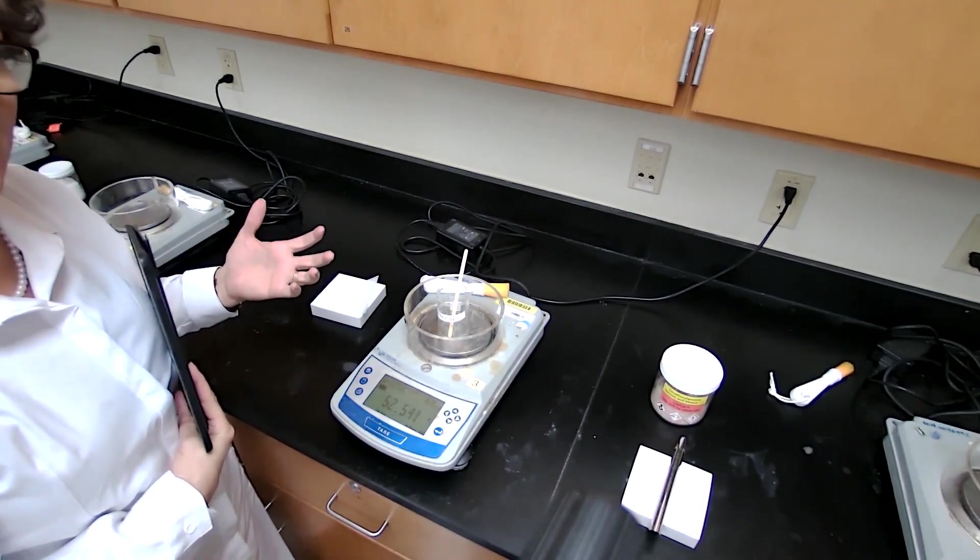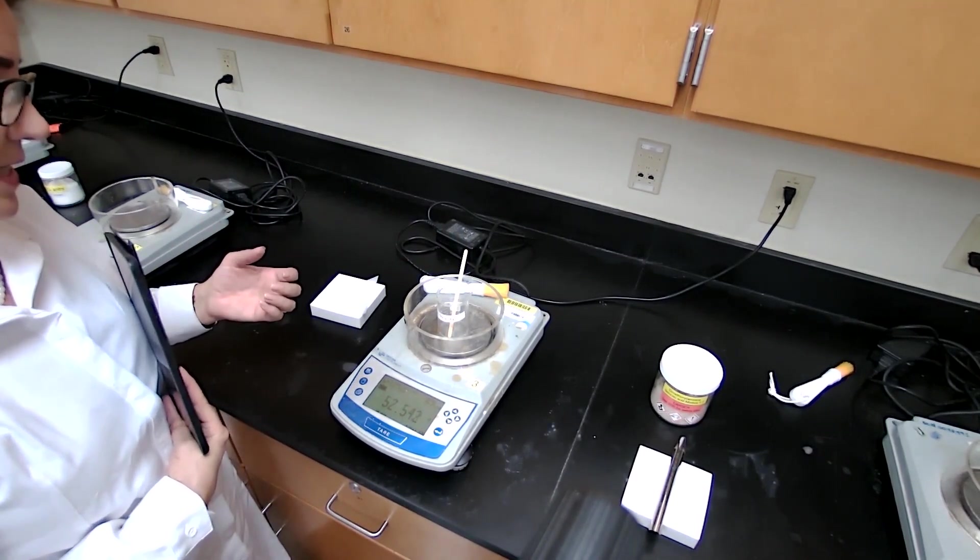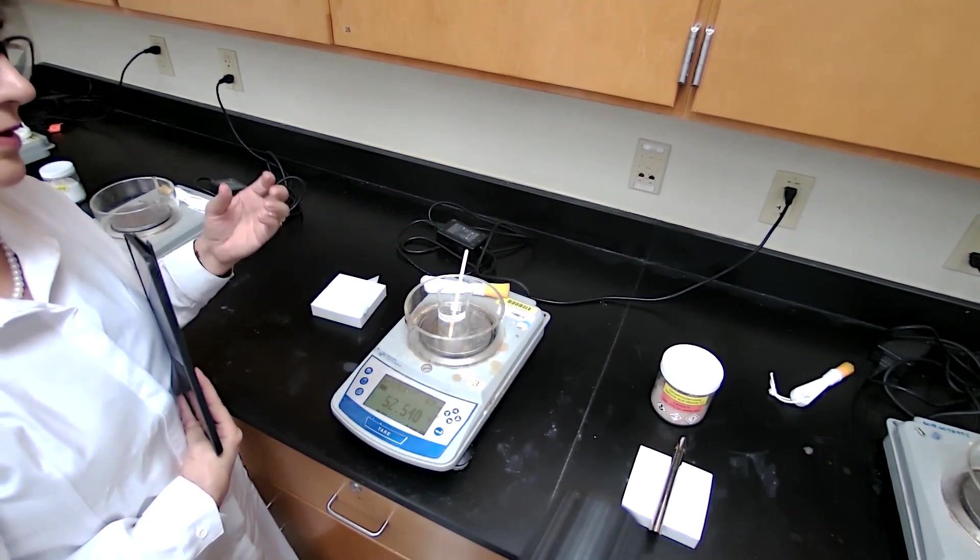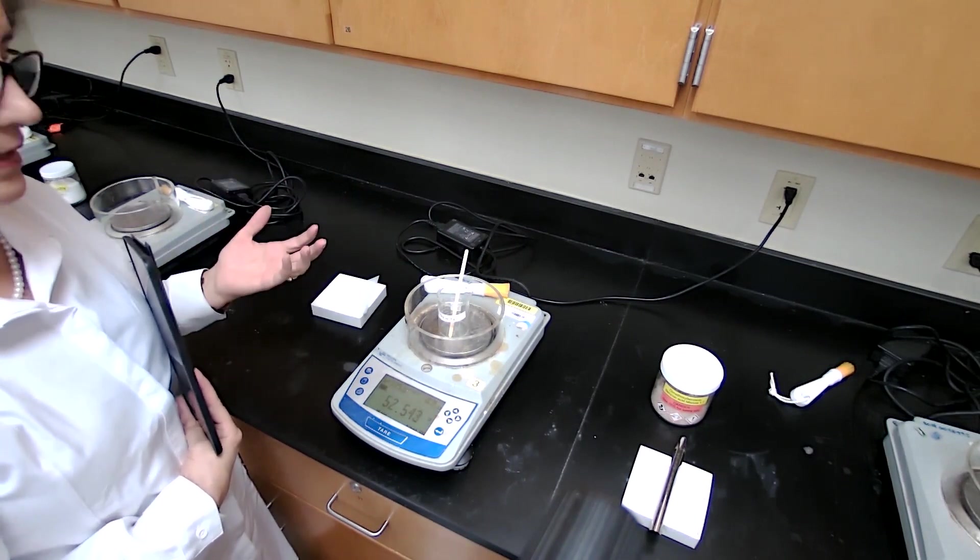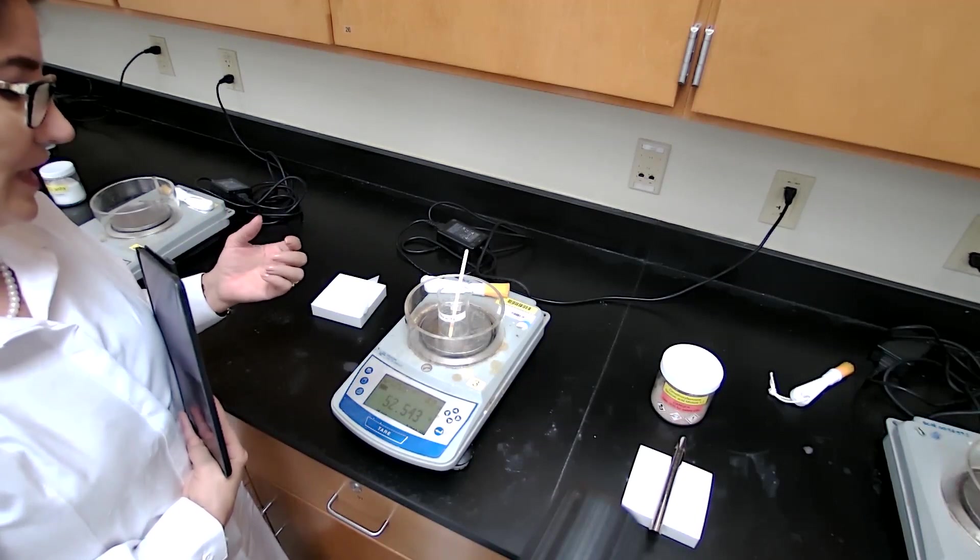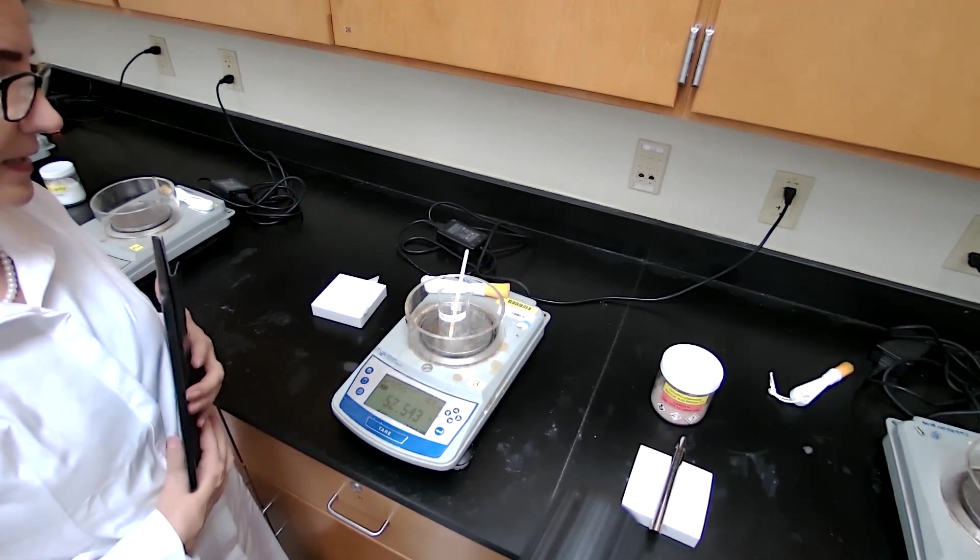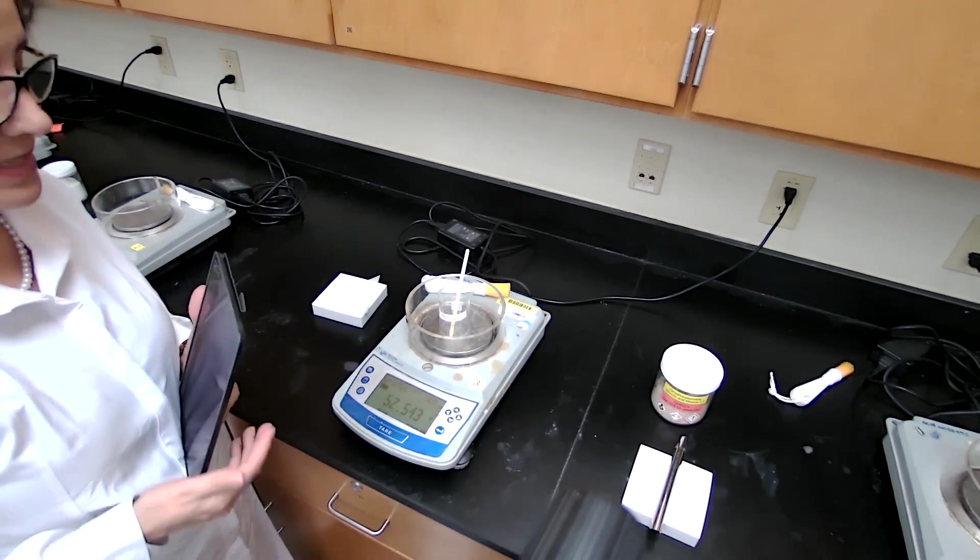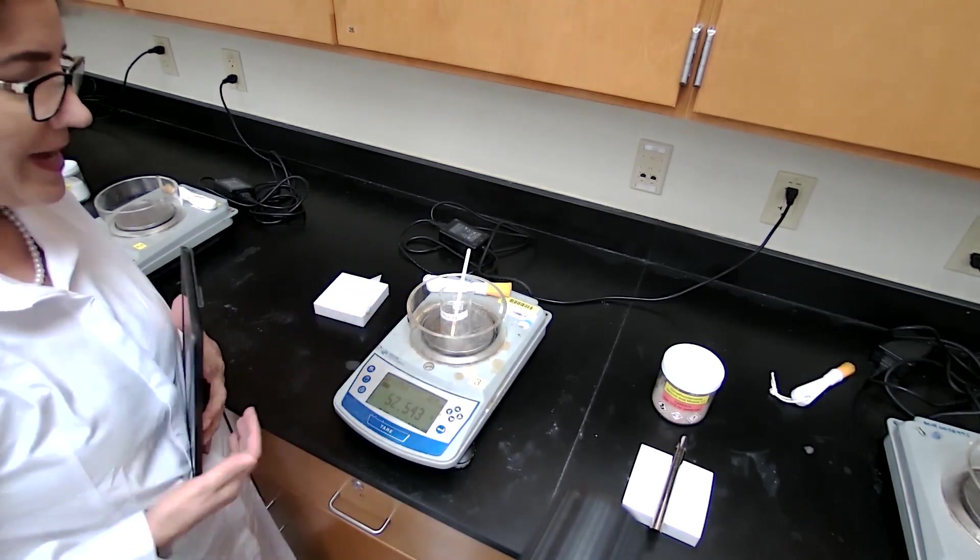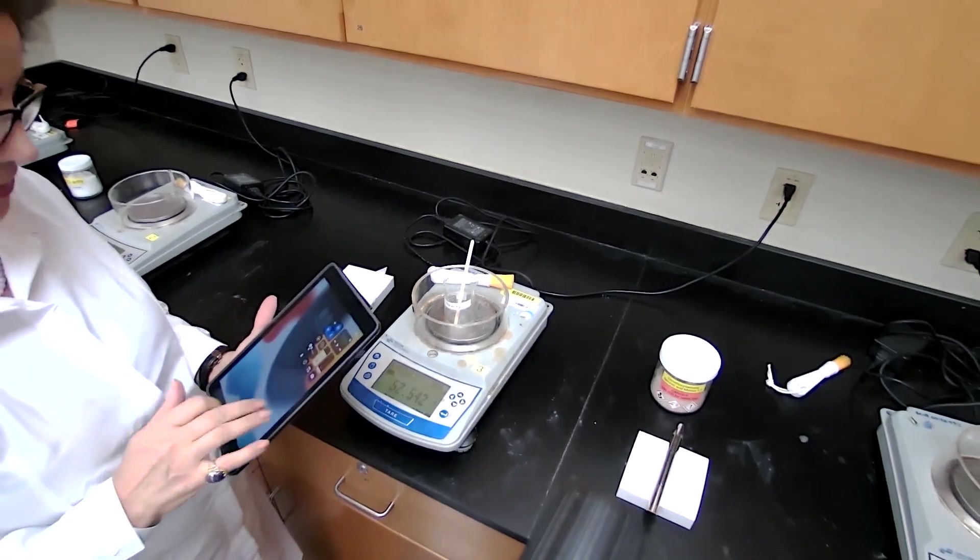The difference will be the mass of the eugenol oil that is recovered. Like any essential oil, you can't get high percent yield of this. That's why they are so expensive, because of how much of the eugenol is in the cloves. So we are not expecting more than like seven, eight percent maybe, but we want to get the mass so we can calculate that percent recovery.